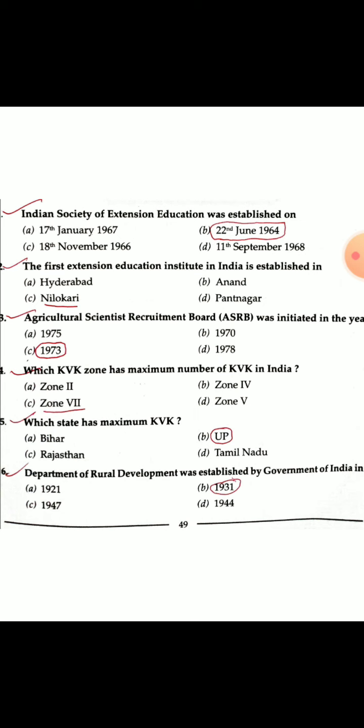Third question: Agricultural Scientist Recruitment Board (ASRB) was initiated in the year — ASRB was established in 1963. Fourth question: